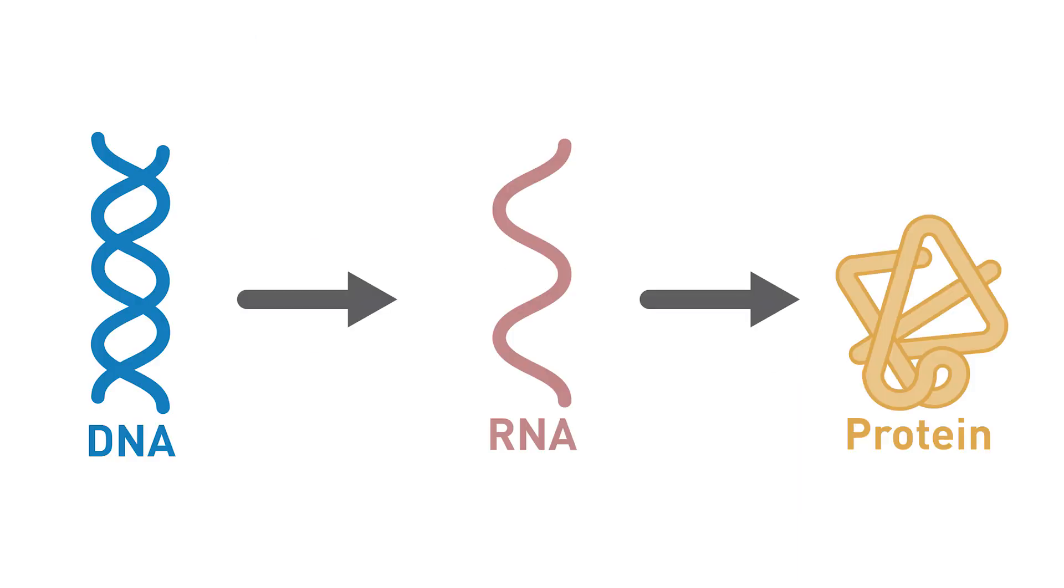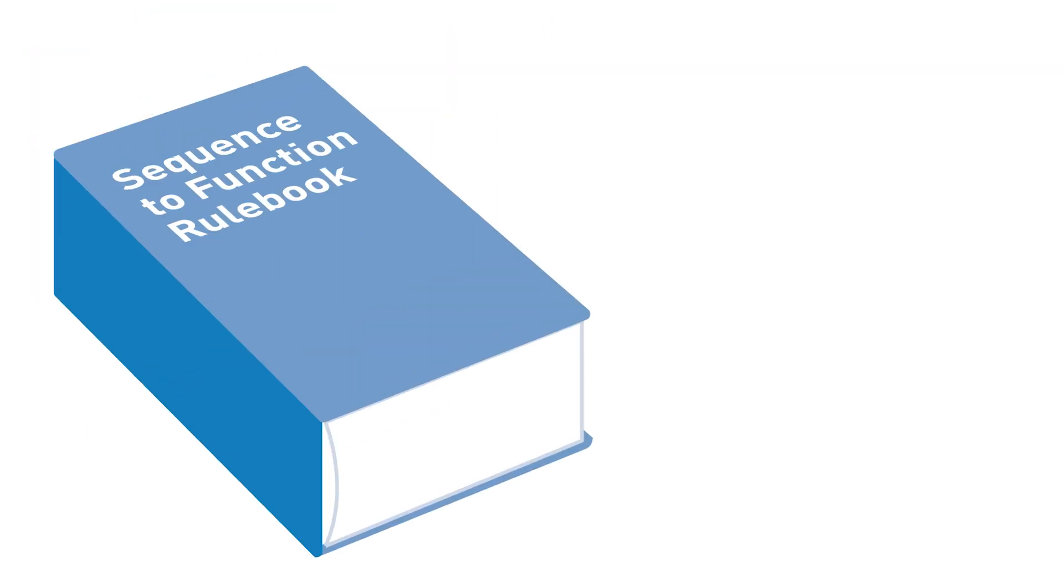One reason that this effort is such a challenge is that many of these variations are found in parts of the genome that don't code for proteins. For these so-called non-coding regions of the genome, we still don't know the rules by which they function.